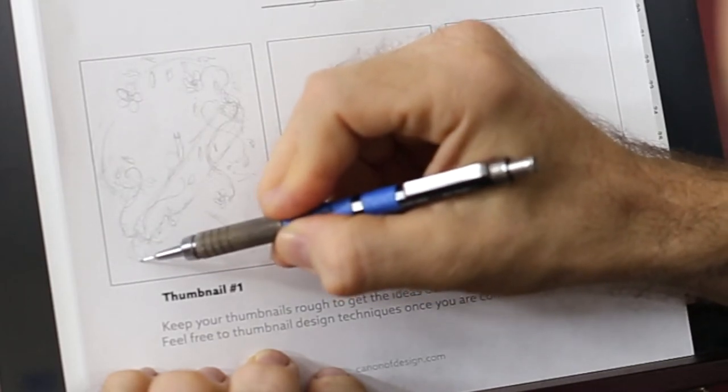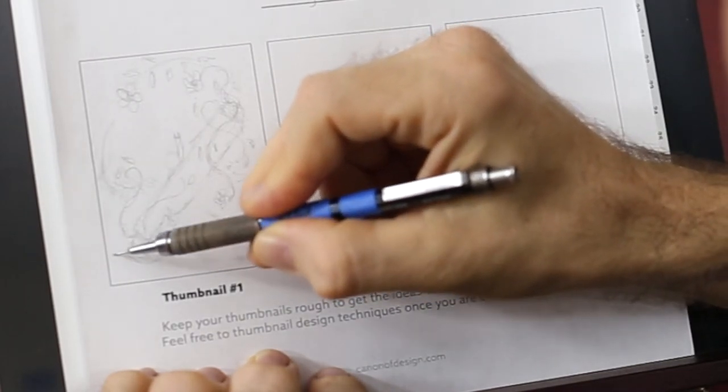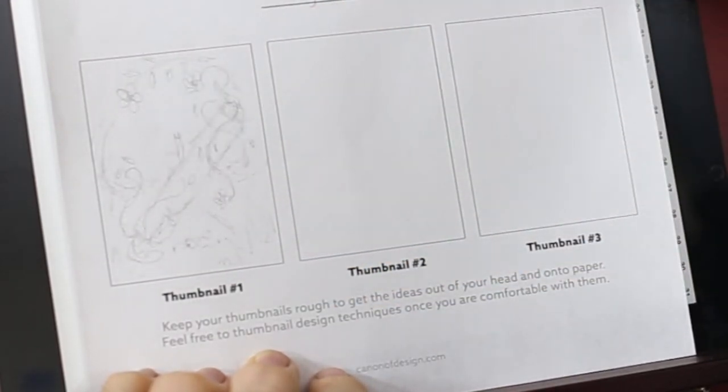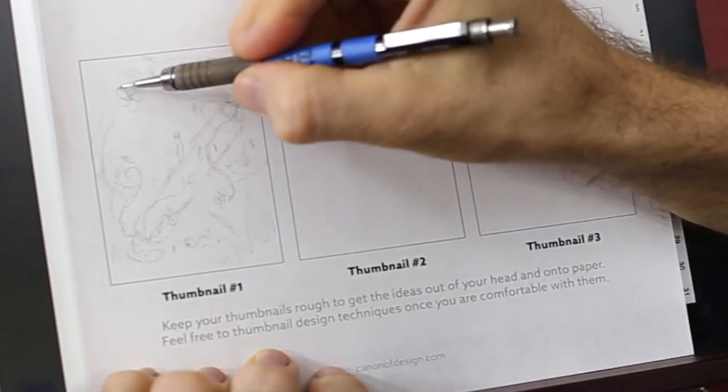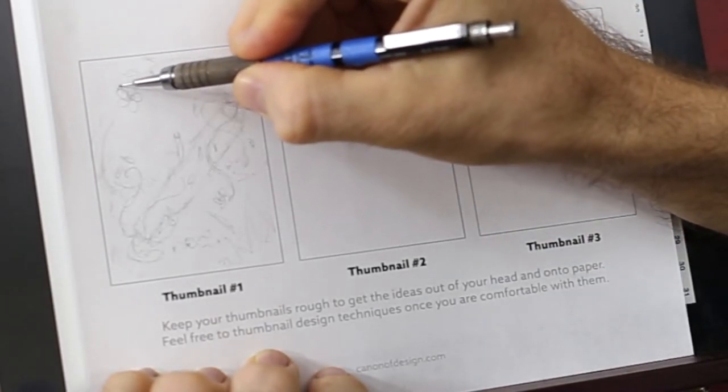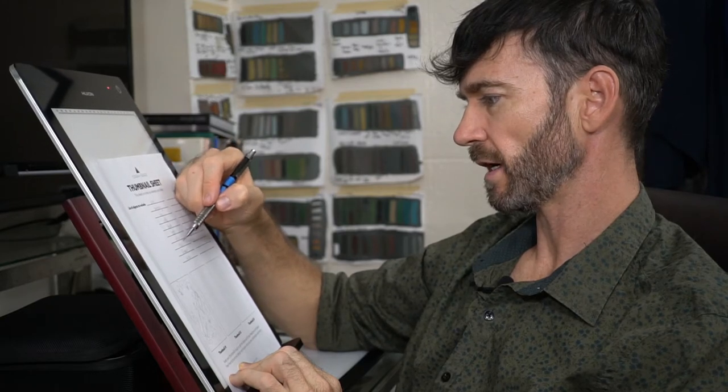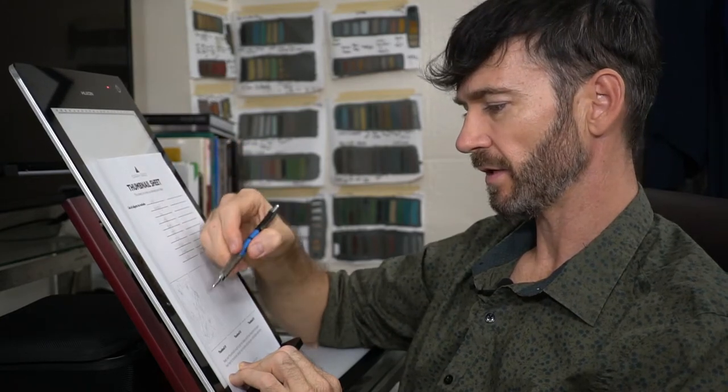A couple more leaves up here, so you can see the composition starting to come together. Some more roots, a couple grass areas. We got snail, ladybug—we'll put the ladybug over here on the flower petal—log, vines, leaves, roots, stick, rocks, flowers, and grass. So we got pretty much everything.